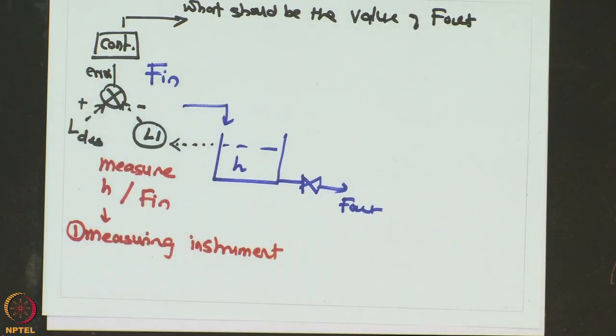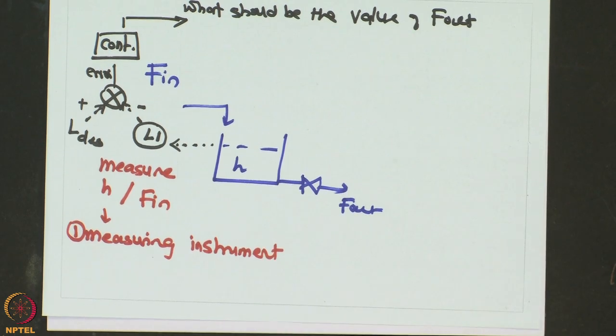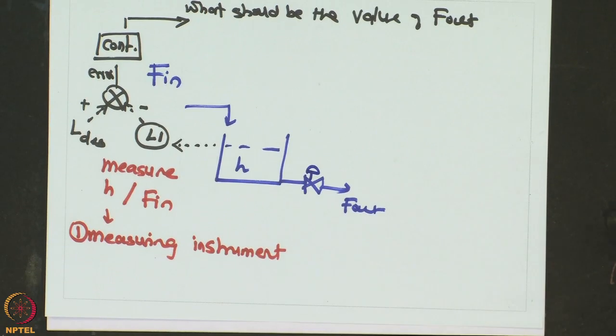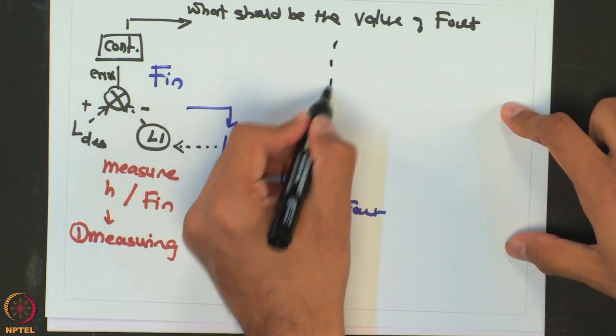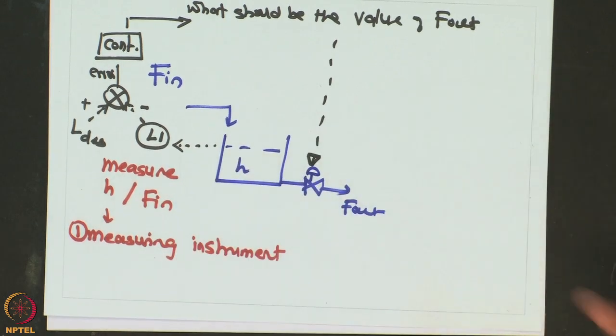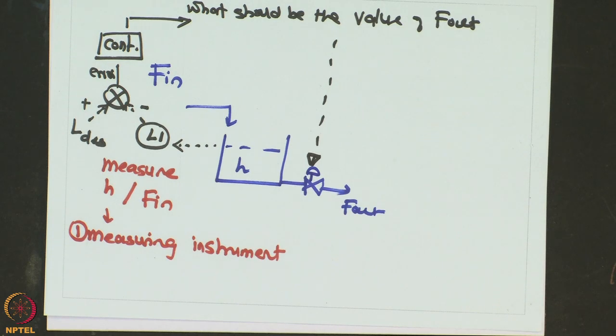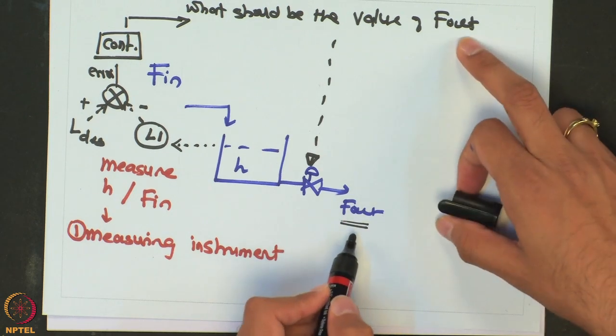But again, this controller is an electrical electronic piece of equipment. Just by saying this is the value of the outlet flow rate, the process is not going to adopt that value. What it needs to do is that particular value has to be sent back to the process and there is a control valve which is going to change its opening, either it will open the valve or close the valve so that the desired value of F out is maintained.